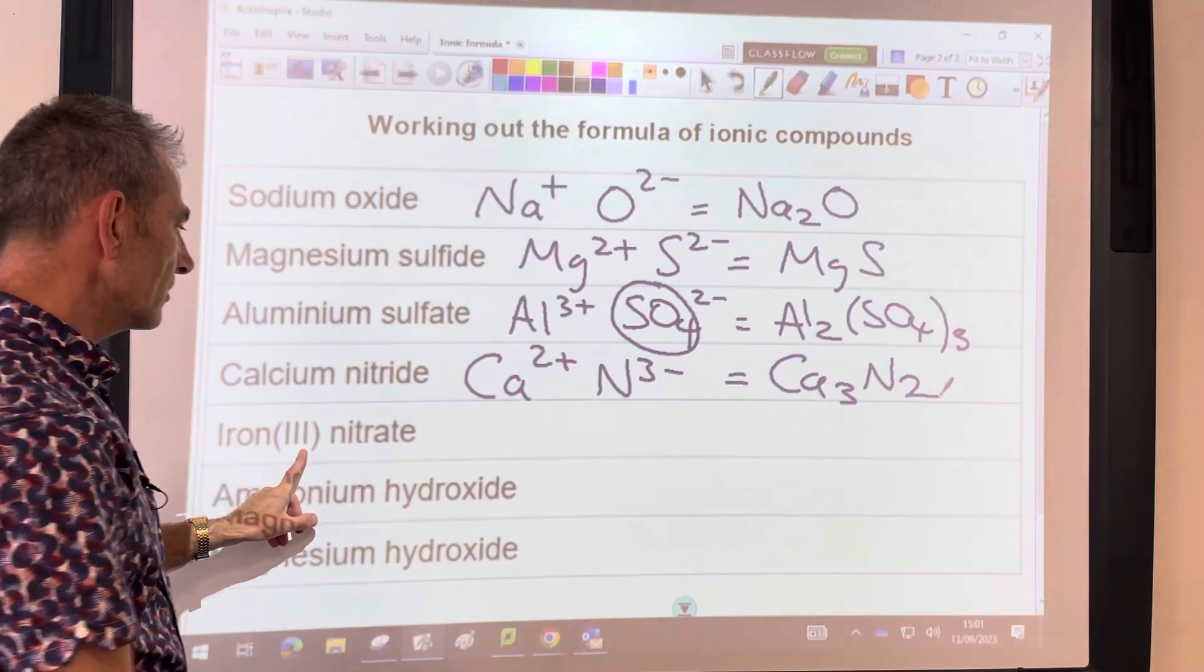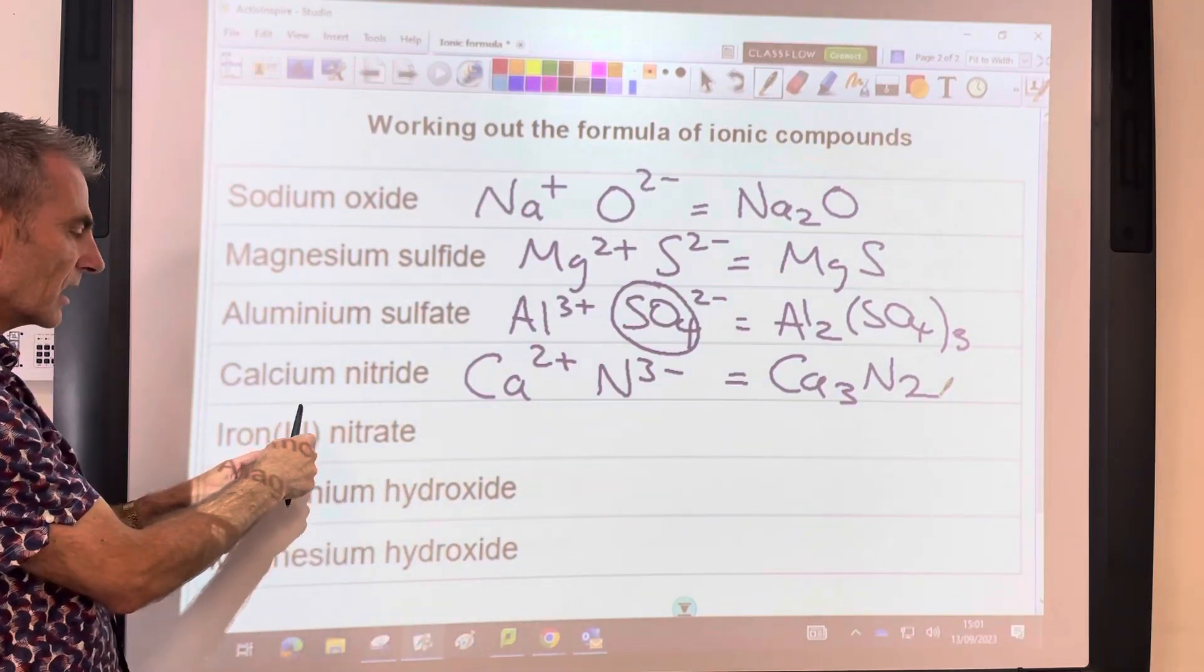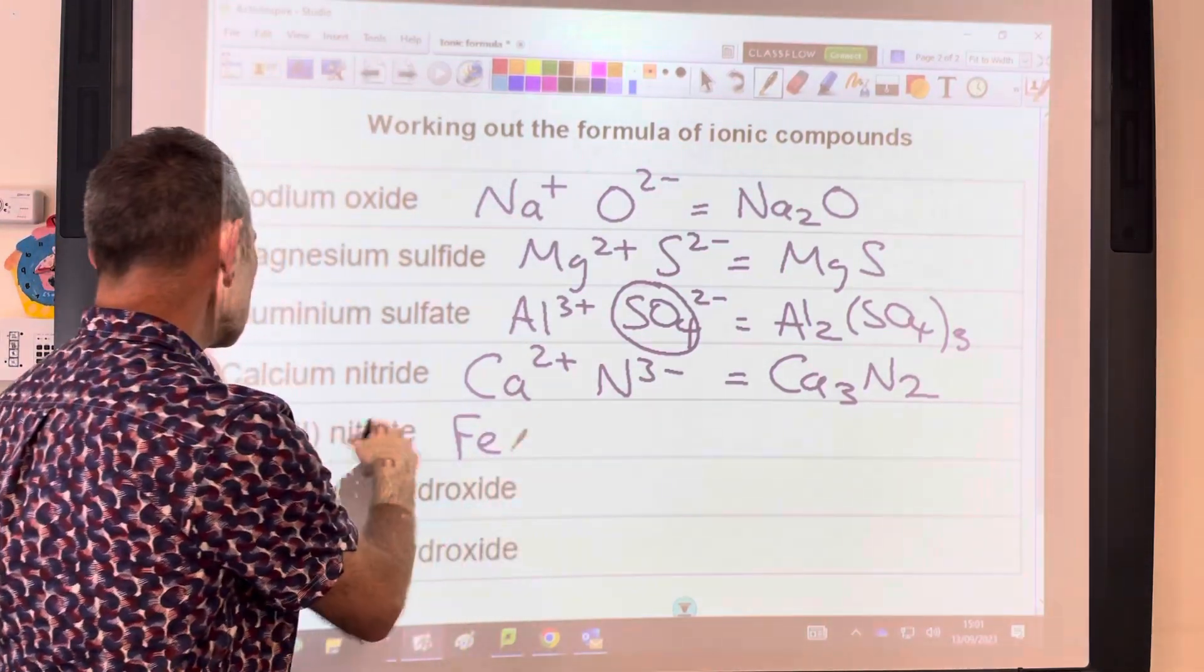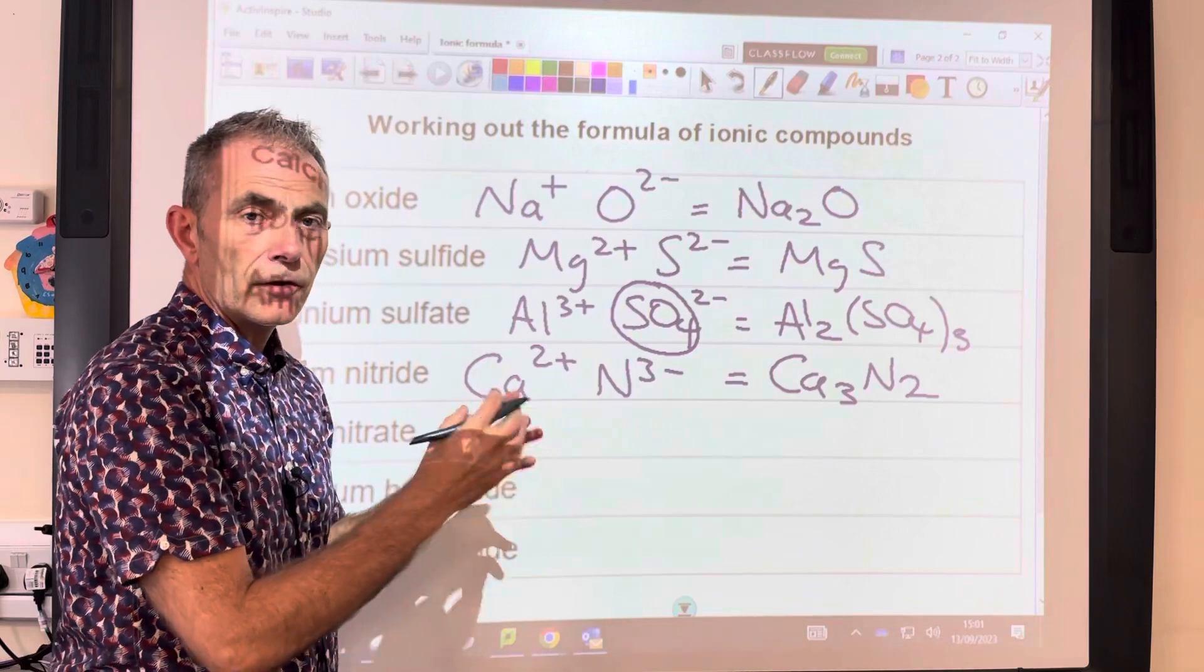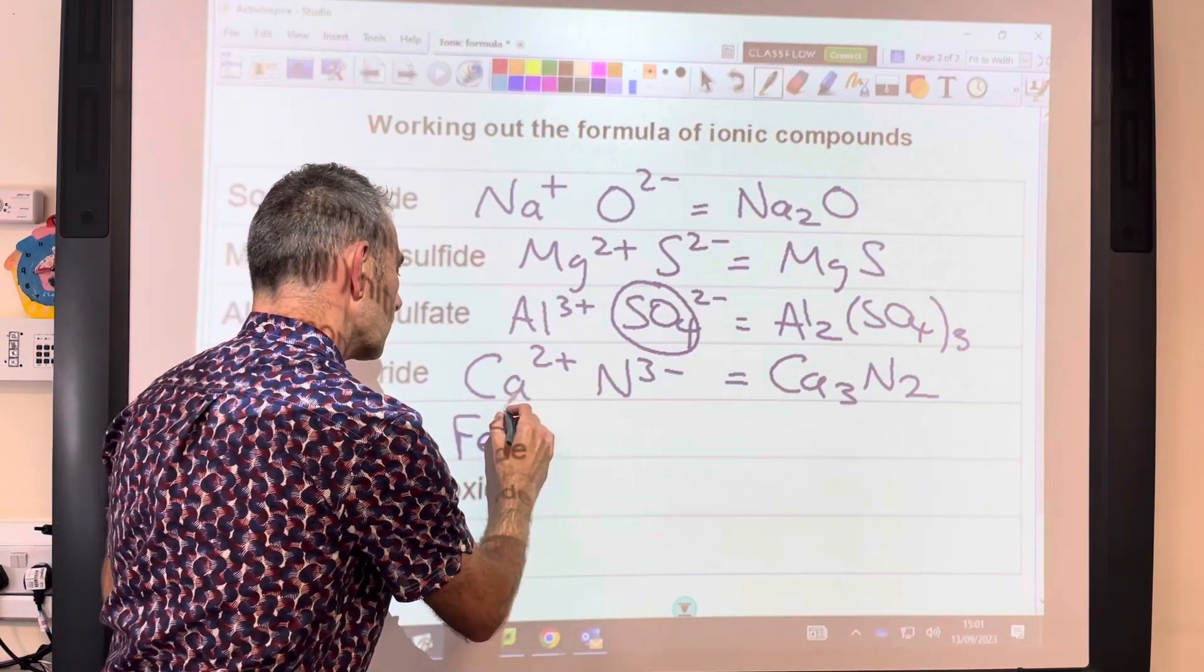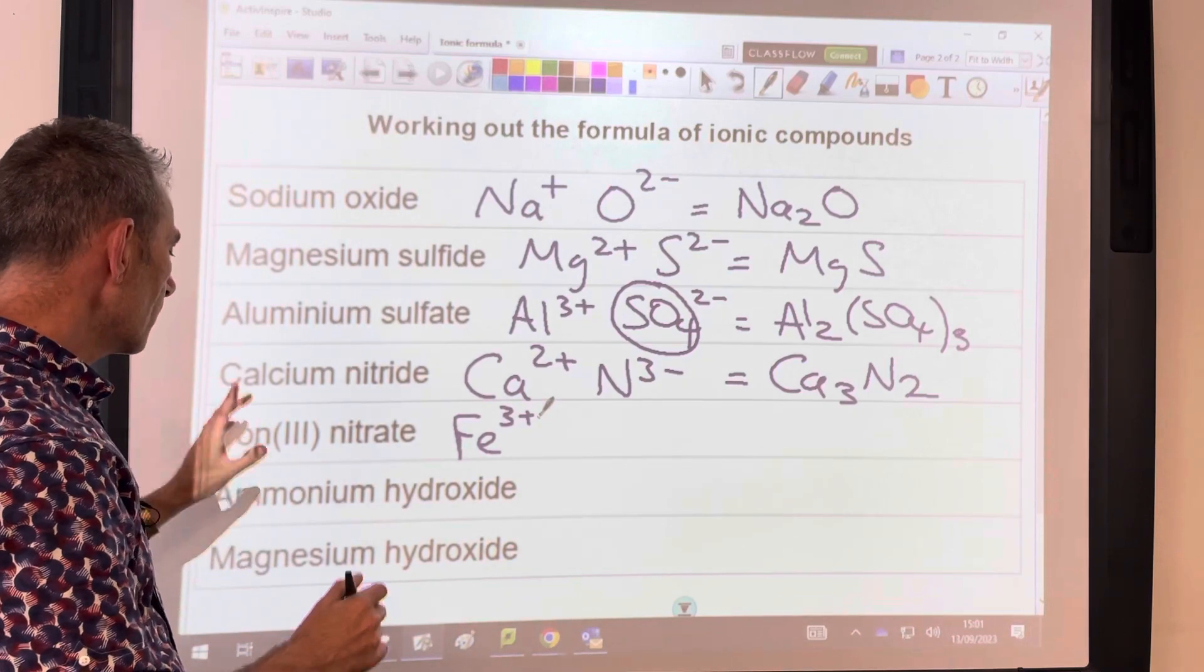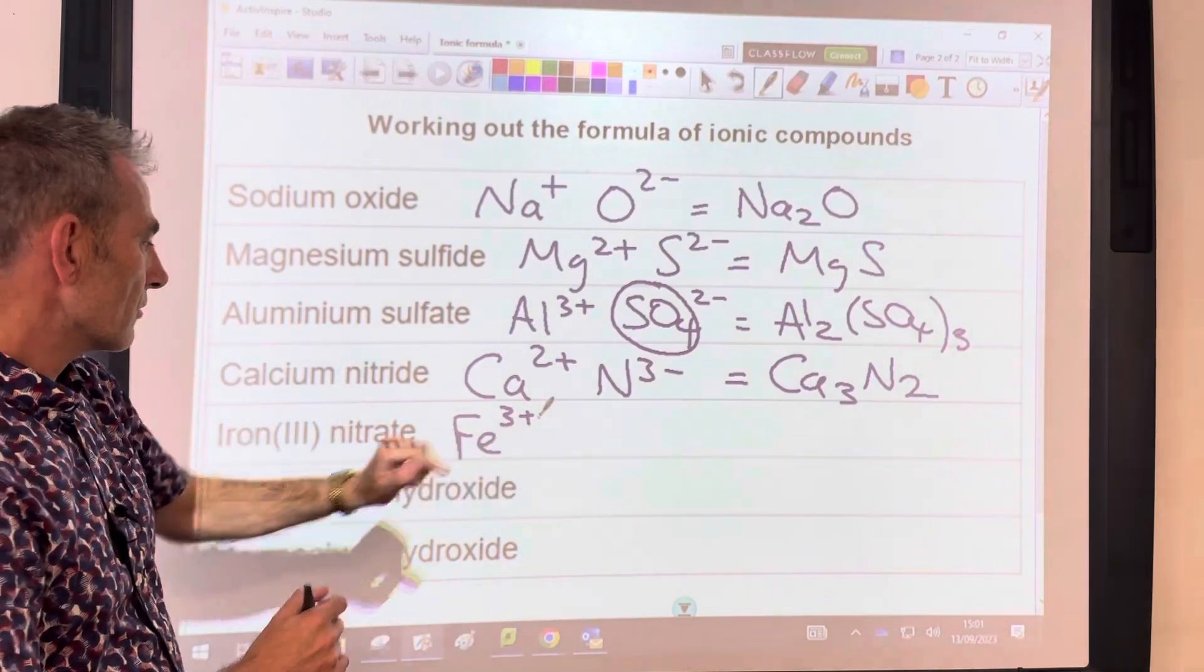Iron(III) nitrate now. This Roman 3 here is telling us that we've got Fe3+. Transition elements have a special property where they can form more than one type of ion. You'll study that later on in your chemistry A-level. But anyway, that Roman 3 just means 3 plus.